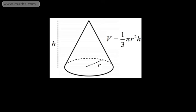In this video, we're going to look at finding the volume of a cone. If we have a cone with a base radius of r and a perpendicular height of h, the volume is given as one-third pi r squared h.